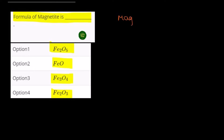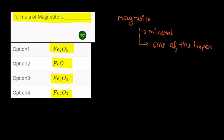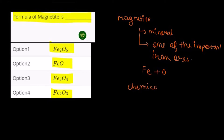This question is about magnetite, which is a mineral and one of the important iron ores. It contains iron and oxygen, and its chemical formula is Fe3O4. So the formula of magnetite is Fe3O4 — option 3 is the correct answer for this question.